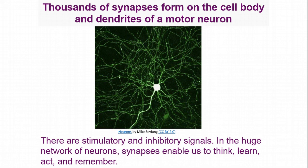We have thousands of synapses forming on each cell body and dendrites of a neuron, with both stimulatory and inhibitory signals. This huge network of neurons and synapses is what allows us to think, learn, act, and remember. This is the electrical and chemical basis for all thought and movement in your body. Thank you all for watching, and have a nice day.